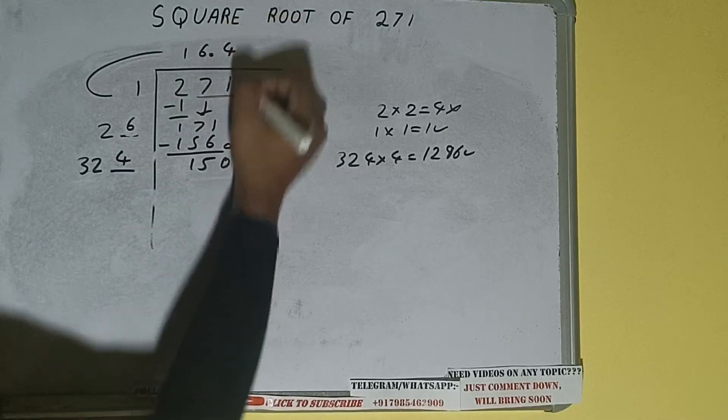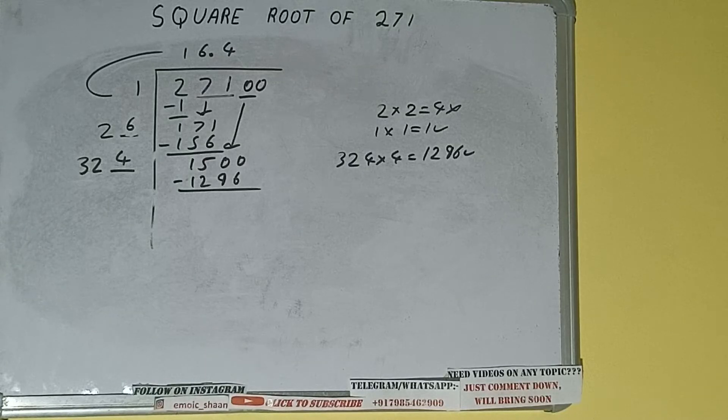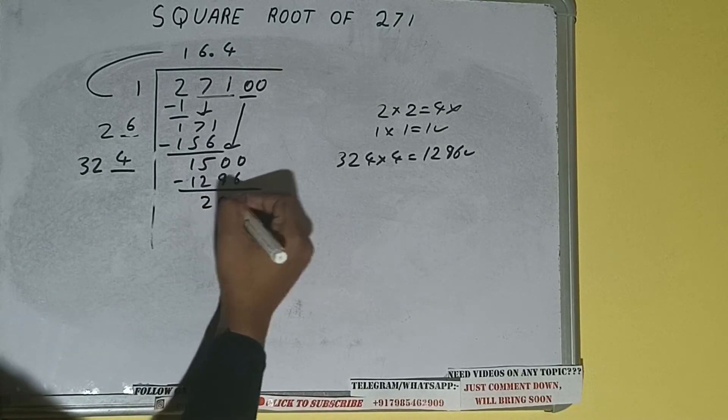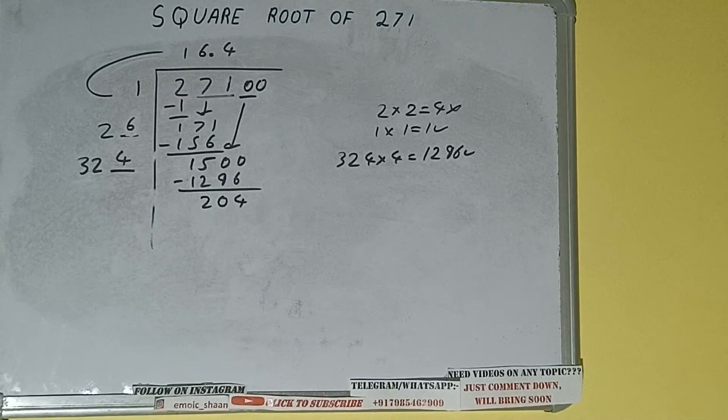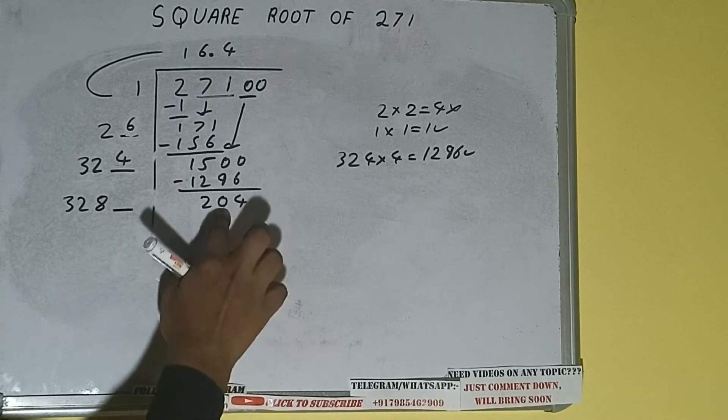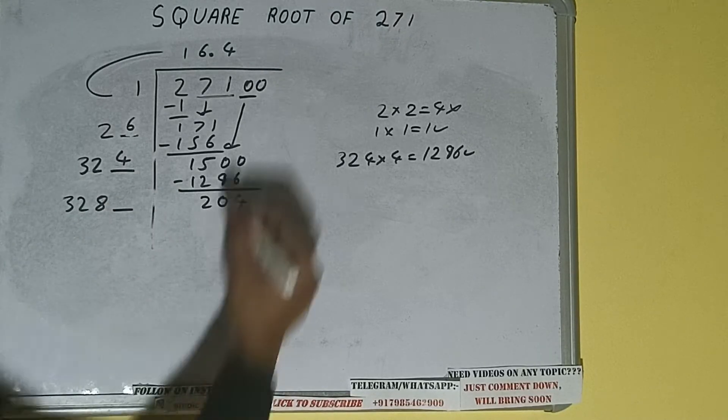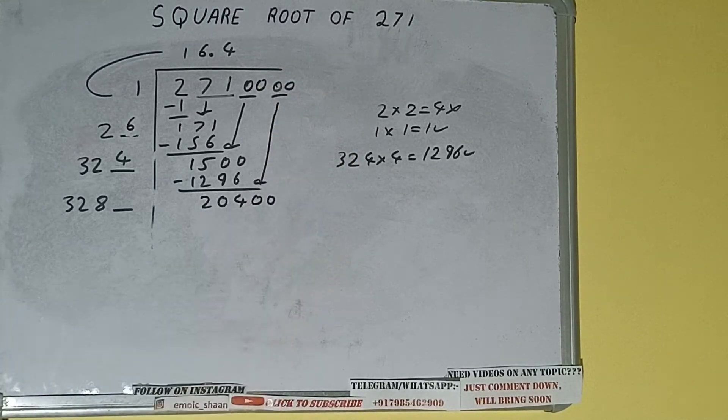We'll be having 1296, which is good to take. So 4 here and 4 here, 1296 subtract and we'll be left with 204. Now 324 into 4 we did, so add both. So 324 plus 4 will be 328 and 1 digit extra, and this number we need to make it big. So bring the next pair of zeros down and it will be 20400.